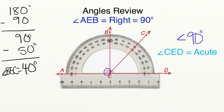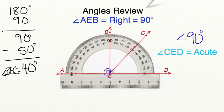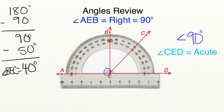Alright, we have checked out an acute angle, we have looked at a right angle. I think it's time we investigate an obtuse angle. To investigate an obtuse angle, we are going to look at angle A-E-C.